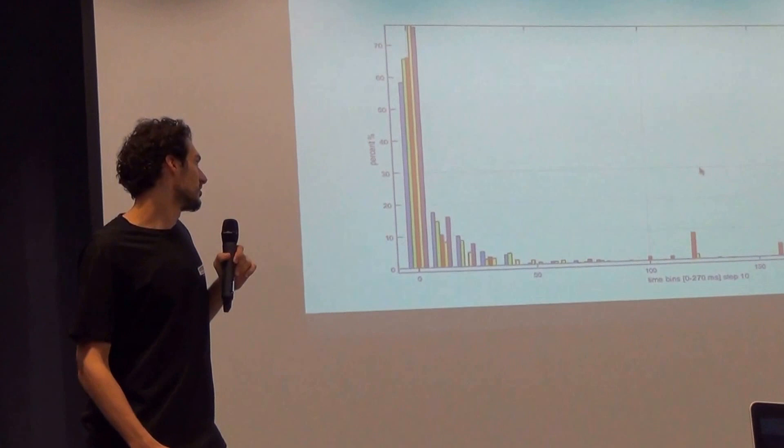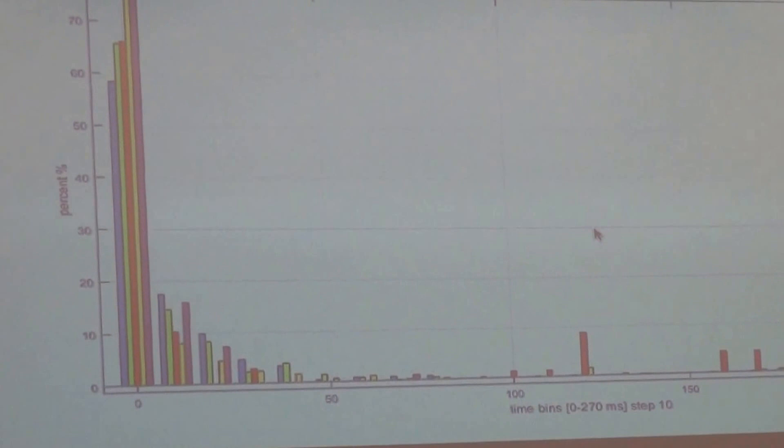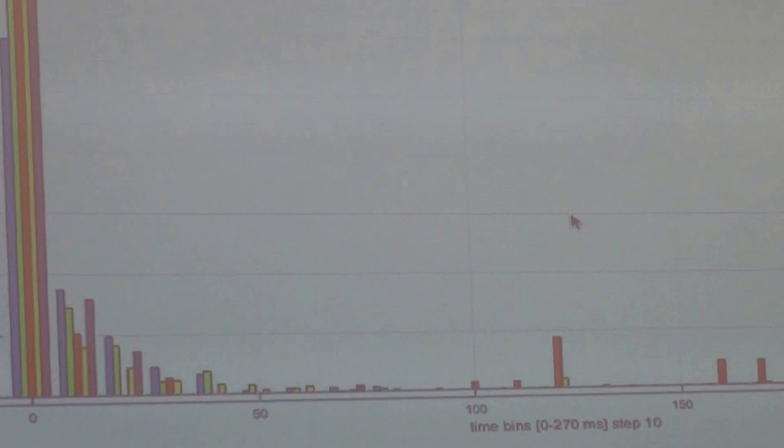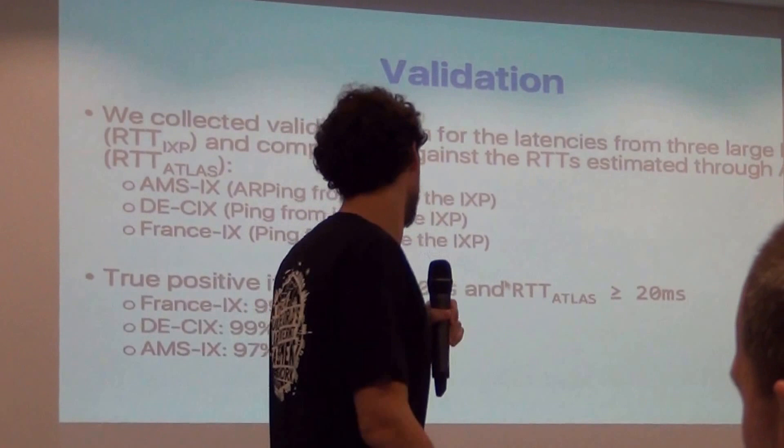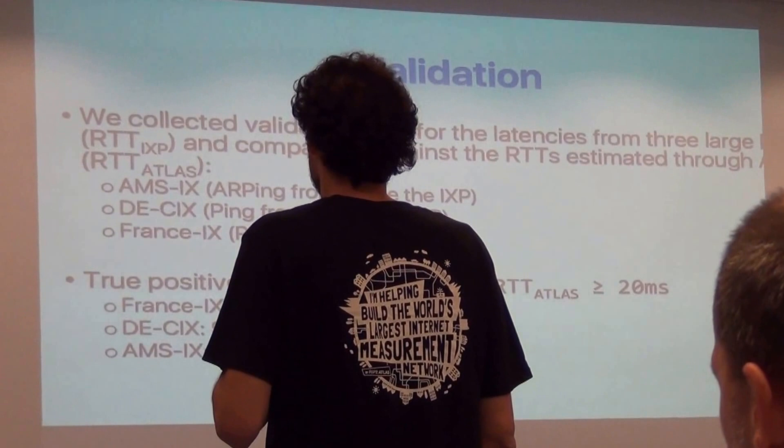Here are the results, shown in 10 millisecond delay bins. About 60 to 80% of the peerings are local, and the ones that are definitely remote are between 10 and 20% for the different IXPs that we studied. We studied just five IXPs, because it's a hackathon and we don't have too much time, but we plan to extend this to more IXPs.